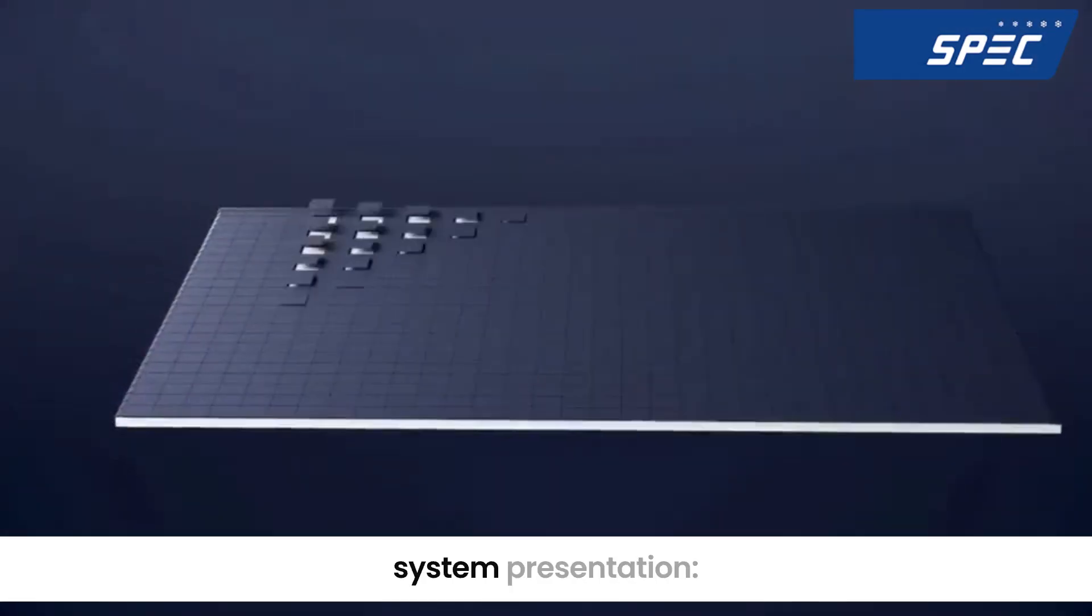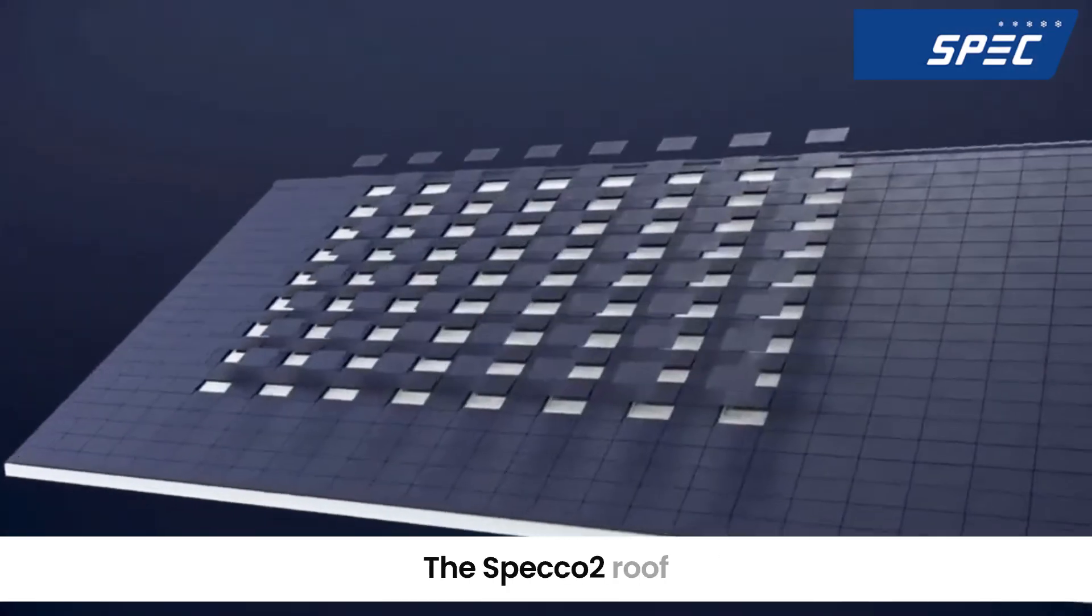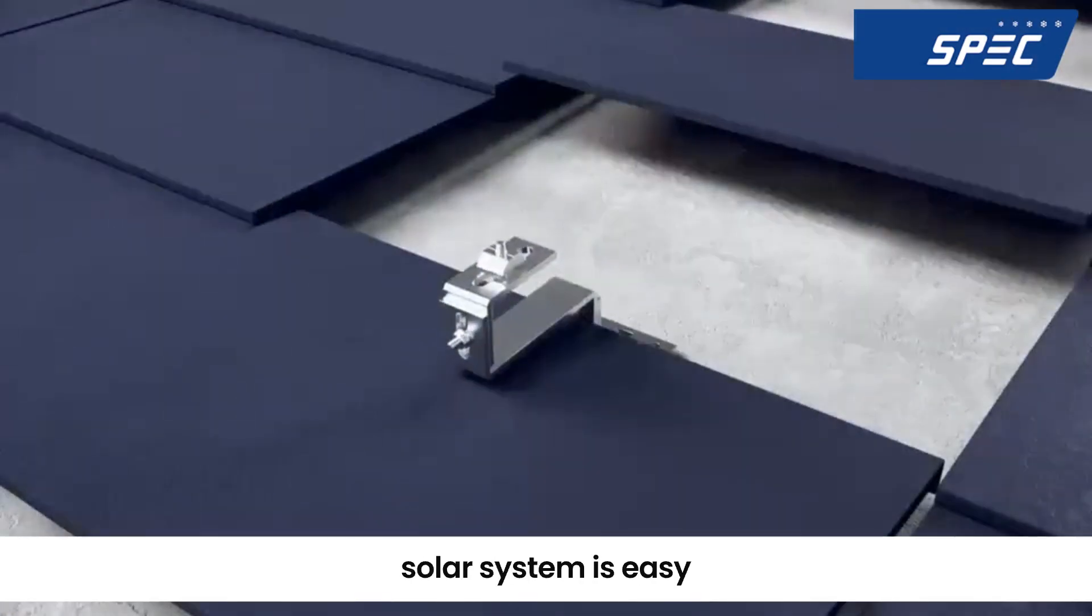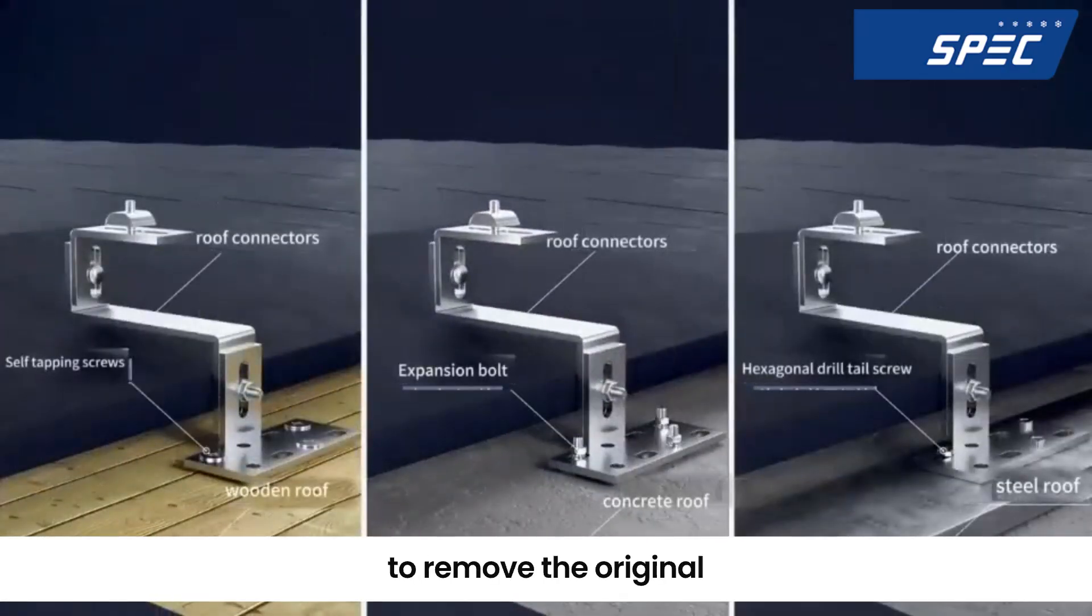Speco 2 roof solar system presentation. The Speco 2 roof solar system is easy to install with no need to remove the original tiles.